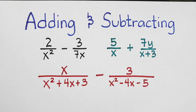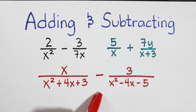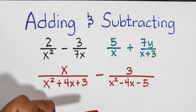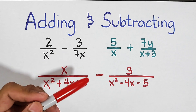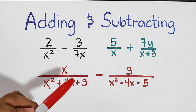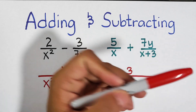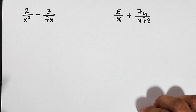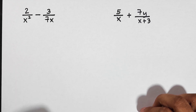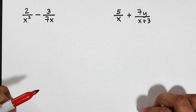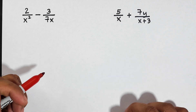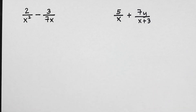Hi guys, it's me Teacher. In today's video we will talk about adding and subtracting rational algebraic expressions. Last time we talked about adding and subtracting RAE with the same denominators — you can see the link of that video in our description box. Without further ado, let's do this topic. Here we have the first two examples of adding RAE with different denominators, and since they have different denominators we need to find the LCD.